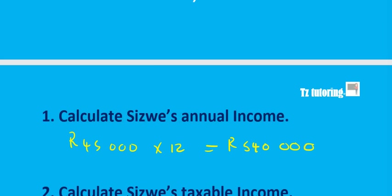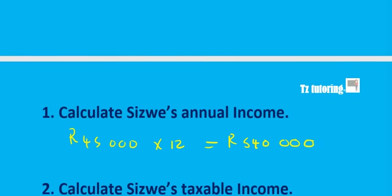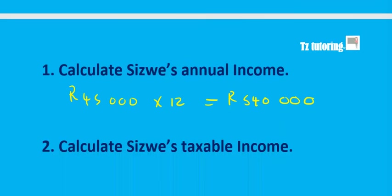The only exception would be when there's a 13th cheque bonus, in which case to calculate the annual income we would not multiply by 12 — we would multiply by 13, because the 13th cheque gets taxed also. But here there's no bonus, there's no 13th cheque, so to get the annual income we just multiply by 12.